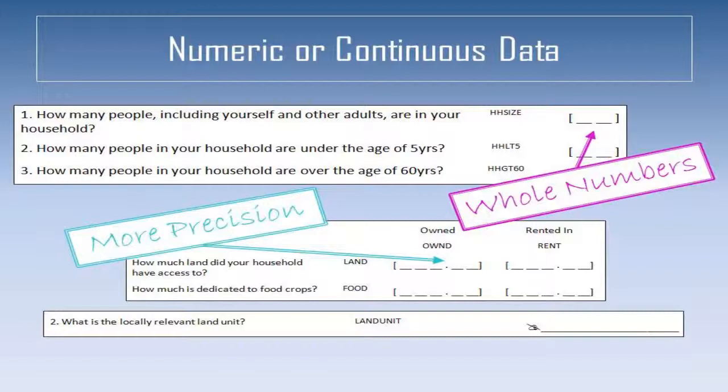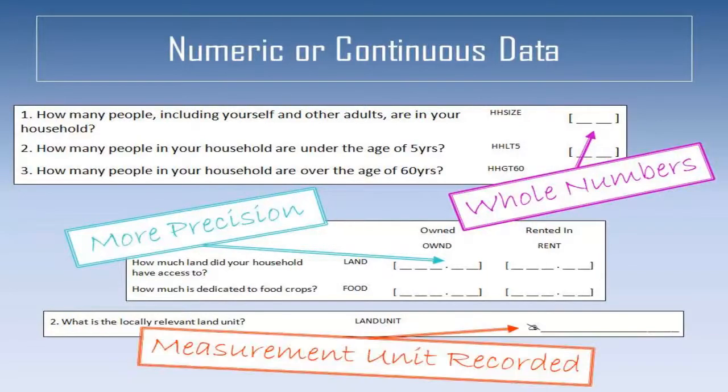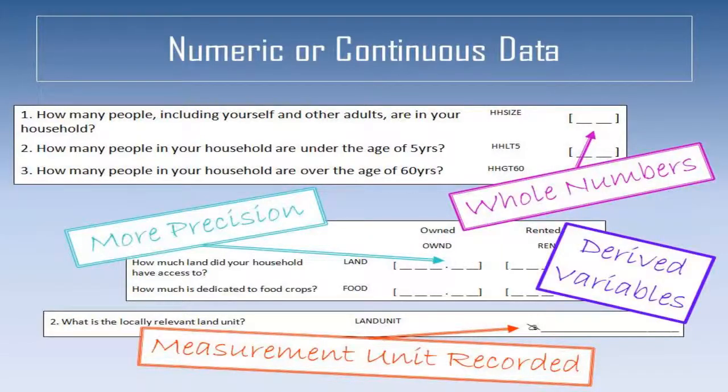When numeric data are the result of measurements, the unit should be specified in advance or be recorded in a separate text column if they are not consistent across all observations, for example plot sizes in hectares, acres and local units. Additional numerical fields can be derived as part of the transition from raw to primary data.